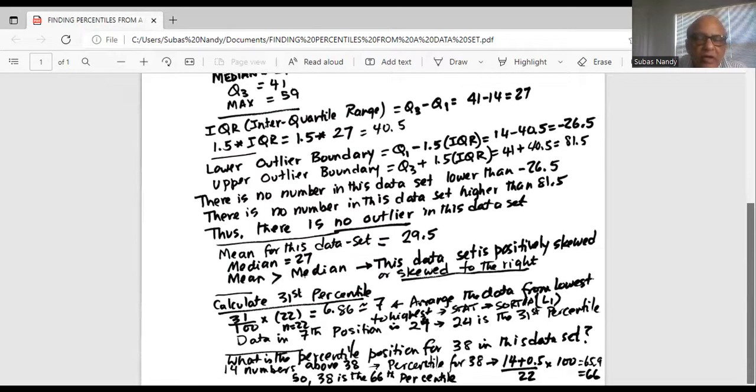Now we want to find out the 31st percentile in this data set. So 31st percentile means we go—let me end up the screen. So 31st percentile is 31 divided by 100 multiplied by the total sample size.